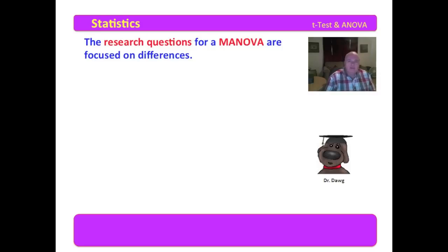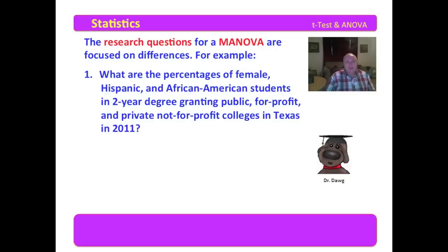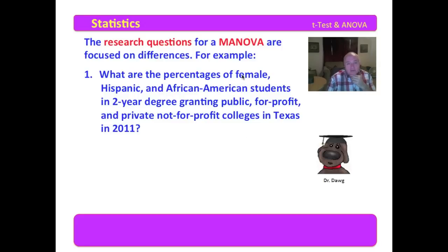Now let's move on to the research questions for MANOVA, which are focused on differences — this is a causal comparative analysis. It's always good form in quantitative analysis to start by getting your descriptives. This descriptive question is: What are the percentages of female, Hispanic, and African American students in two-year degree-granting public, for-profit, and private not-for-profit colleges in Texas in 2011? The groupings are public, for-profit, and not-for-profit colleges — three groups — and we'll be looking at three variables: percentages of female, Hispanic, and African American students.